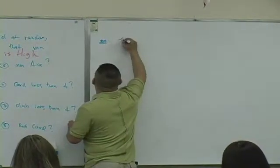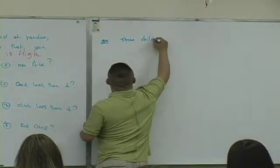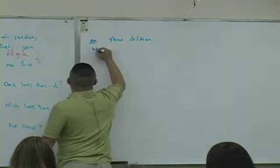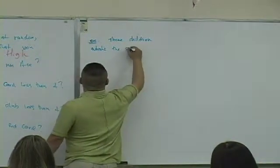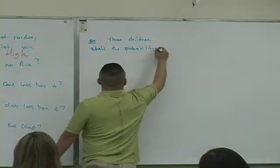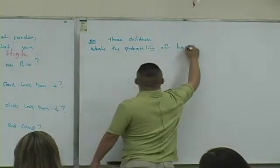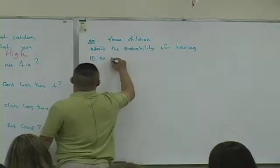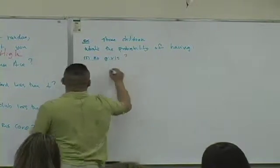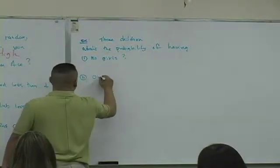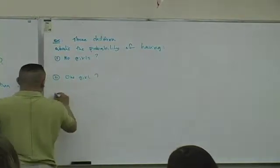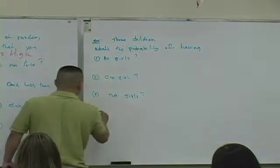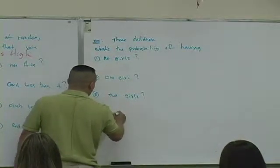Another example. You're going to have three children. What's the probability of having: one, no girls; two, one girl; three, two girls; four, all girls.